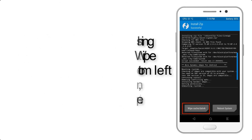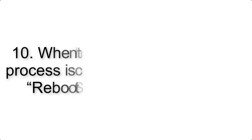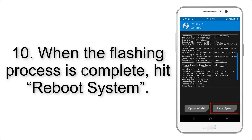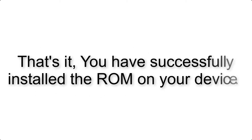Step 9: After GApps flashing completes, select Wipe Cache and Dalvik from the bottom left side of the screen and swipe to wipe. Step 10: When the flashing process is complete, hit Reboot System. That's it — you have successfully installed the ROM on your device.